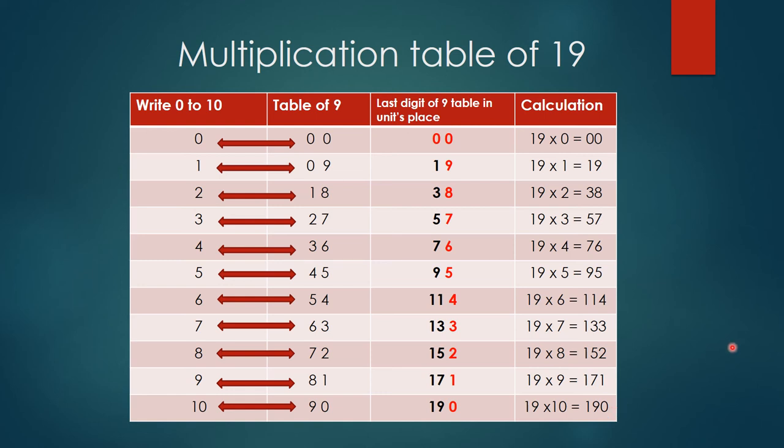Look how simple it is! Whenever you want to know a multiple of 19, you don't have to make this whole table. For example, 19×5: 9×5=45, keep that in mind. Which multiple? Fifth. So 5+4=9, leading to 95. You don't have to write the whole table each time.